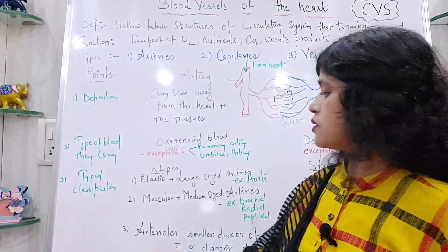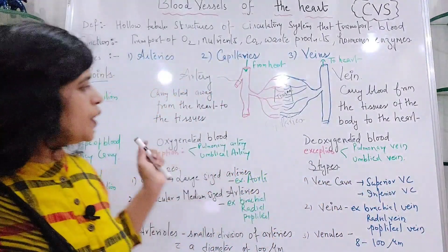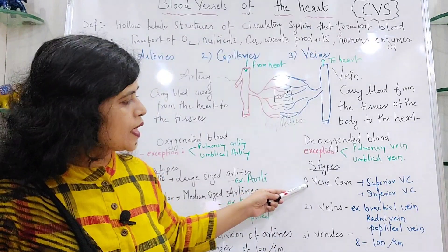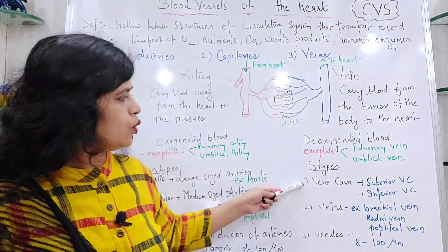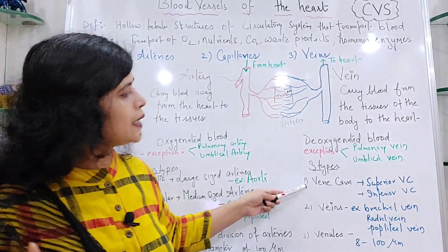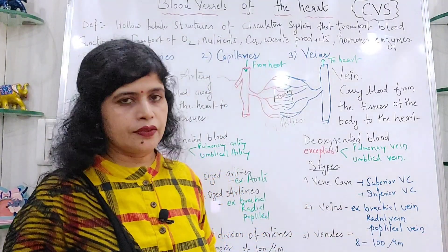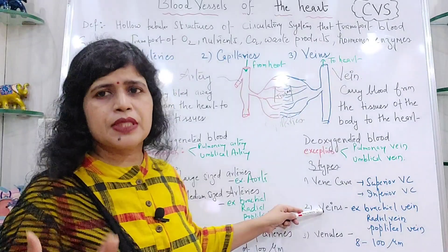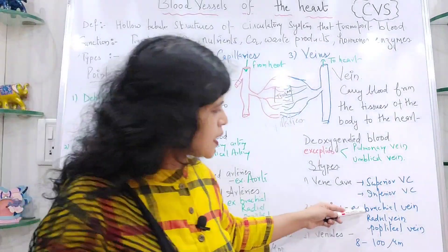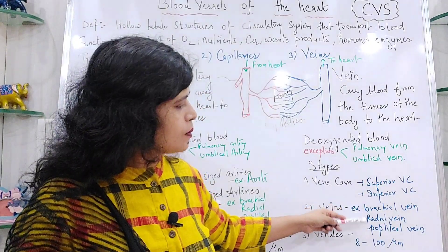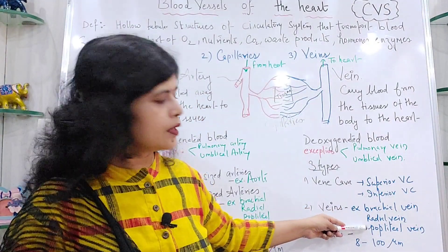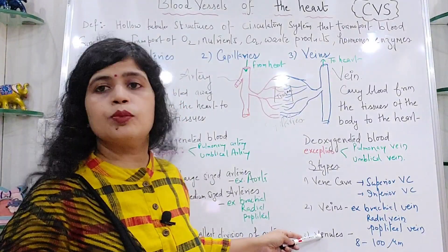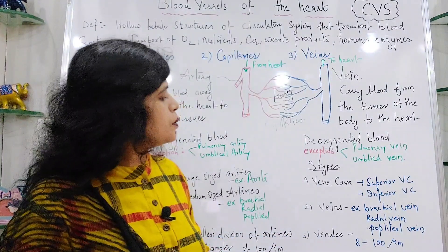Veins are also classified into three types. First are the venae cavae — the large veins of the body, that is superior vena cava and inferior vena cava. Second are the medium-sized veins, such as the brachial vein, radial vein in the arms, and popliteal vein in the legs. Third and smallest are the venules, with a diameter of approximately 8 to 100 micrometers.